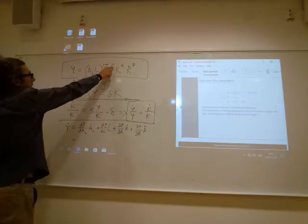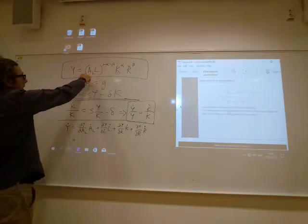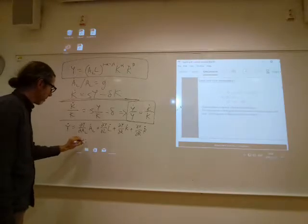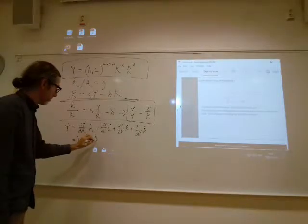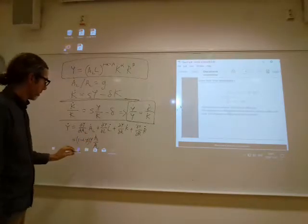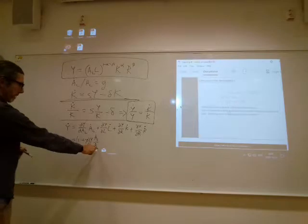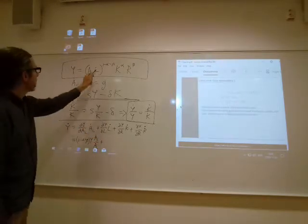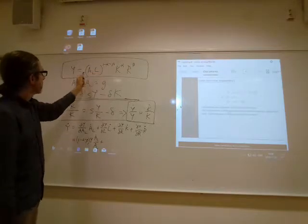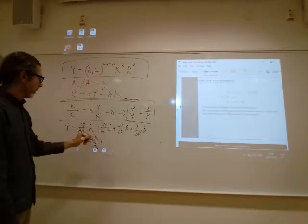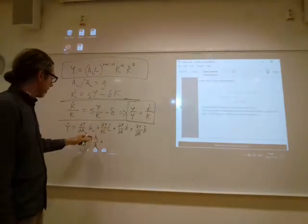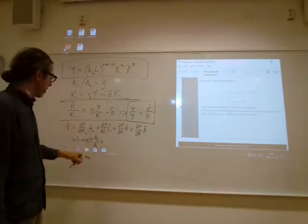DY DT AL is 1 minus alpha minus beta times Y over AL. So, I've shifted the AL across to get that. DY DT AL is 1 minus alpha minus beta times Y over L, and then it's times L dot, but L dot is 0, so that disappears. Oh, and AL dot over AL is just G, isn't it?